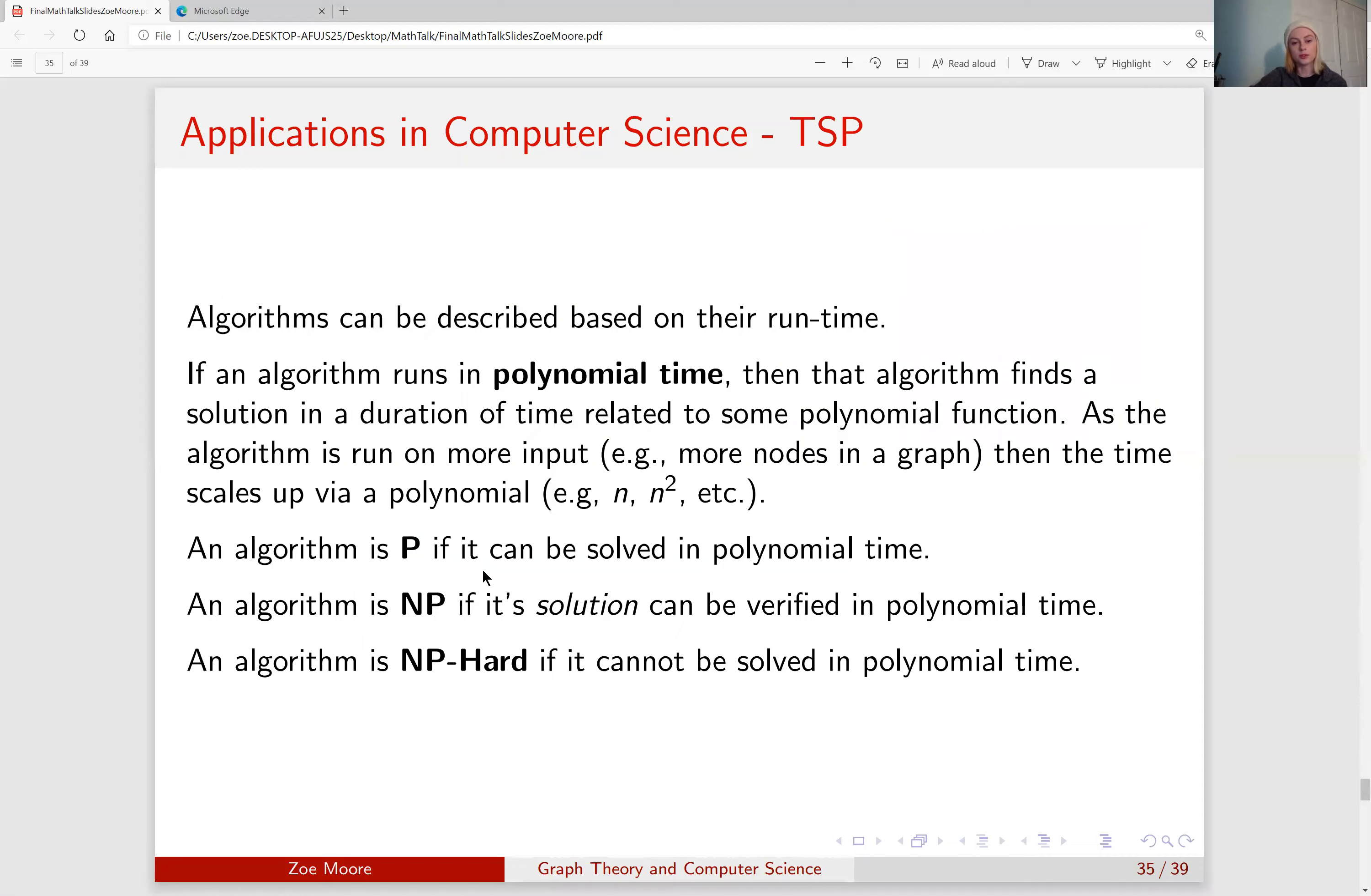Now algorithms, like we mentioned before, can be described based on their run time. If an algorithm runs in polynomial time, then that algorithm finds a solution in a duration of time related to some polynomial function. As the algorithm runs on more input, so in our case more nodes or edges in a graph, then the time it takes to run scales up via the polynomial it's described by. So if an algorithm runs in n squared time, if you have 3 nodes, that would equate to 9, but if you have 10 nodes, that would equate to 100, meaning that it scales up quite significantly in cases.